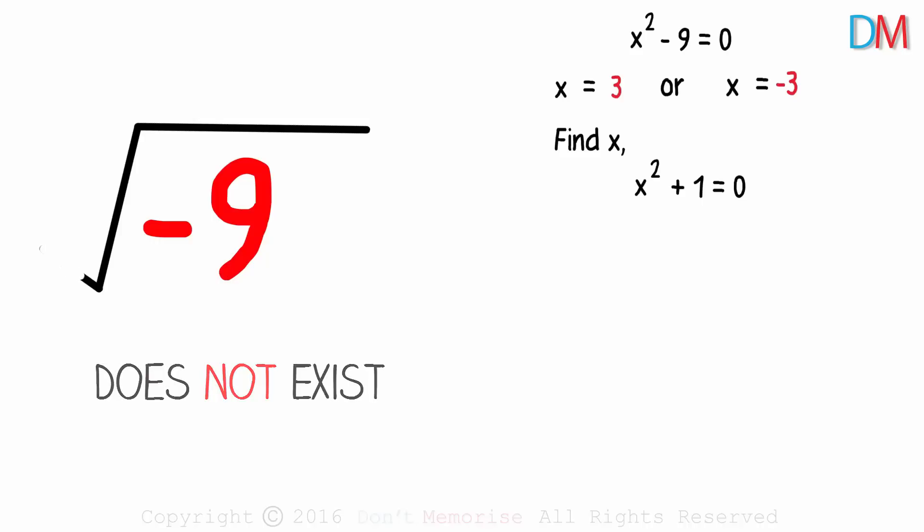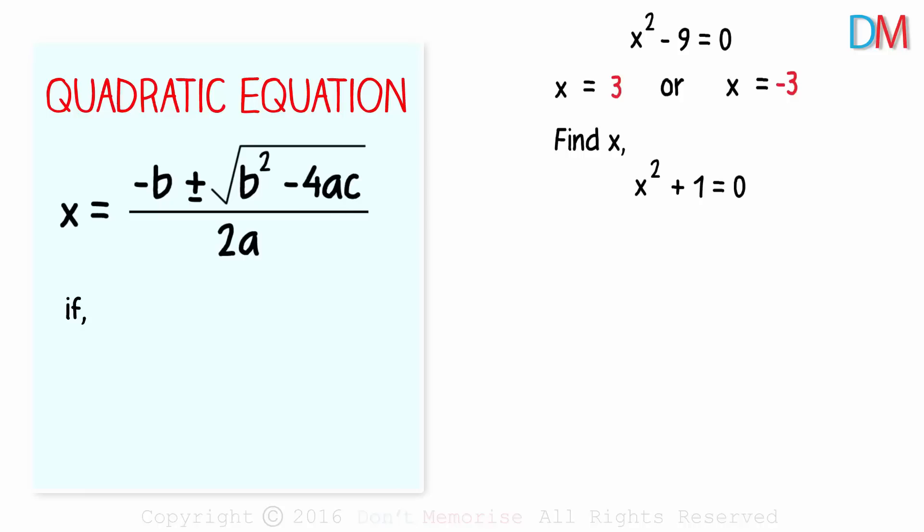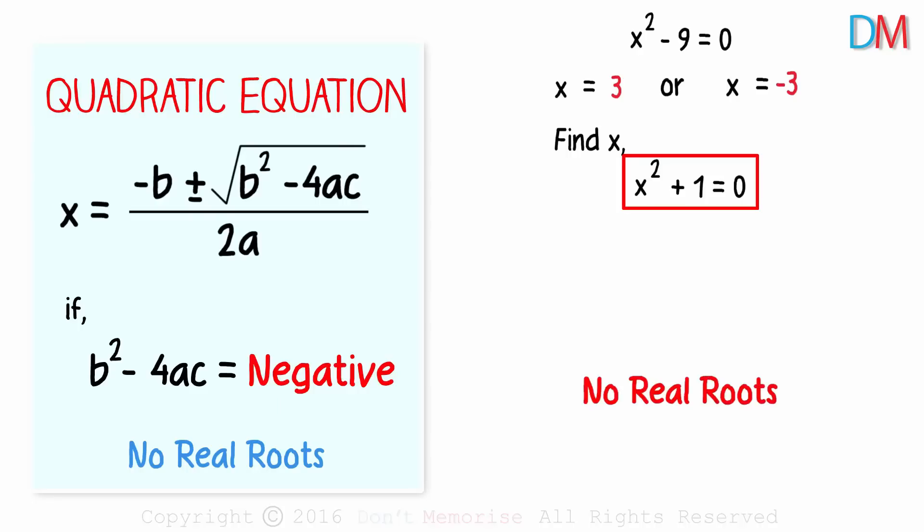Do you remember that while finding the solution of a quadratic equation using the formula, if the discriminant, b squared minus 4ac was negative, we said that there are no real roots of the quadratic equation. Based on what we had studied earlier, x squared plus 1 equal to 0 will not have any real roots as the value of discriminant is negative 4.